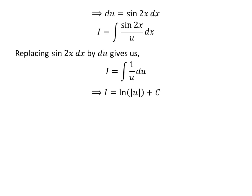We know the integral of 1 upon u is equal to the natural log of the absolute value of u. So, i is equal to natural log of the absolute value of u plus capital C. Capital C is the arbitrary constant of the indefinite integral.